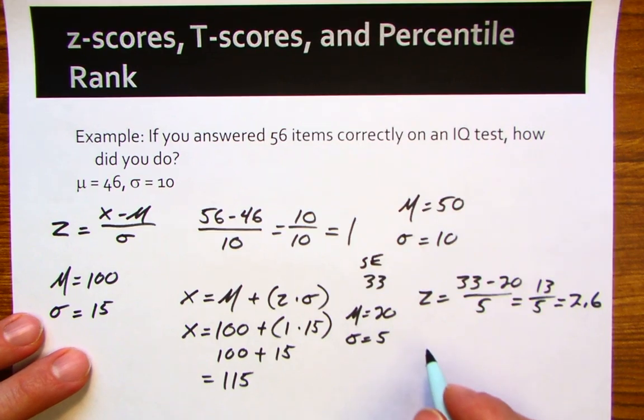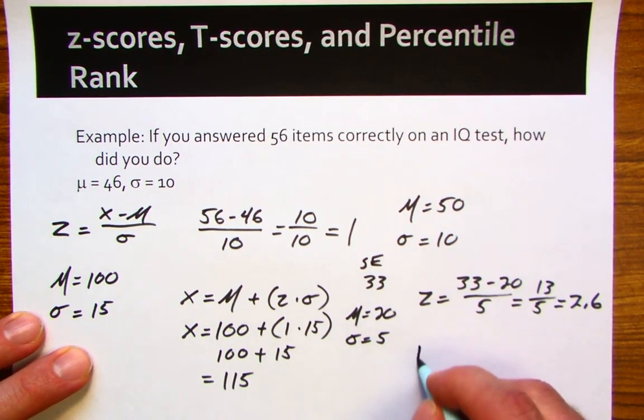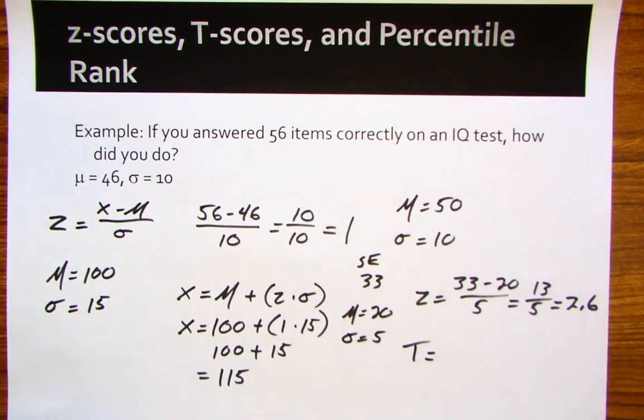From there, we could figure out a t-score. We mentioned before we don't like to interpret results in terms of z-scores because the 2.6 seems like a very low score. It's actually extraordinarily high.